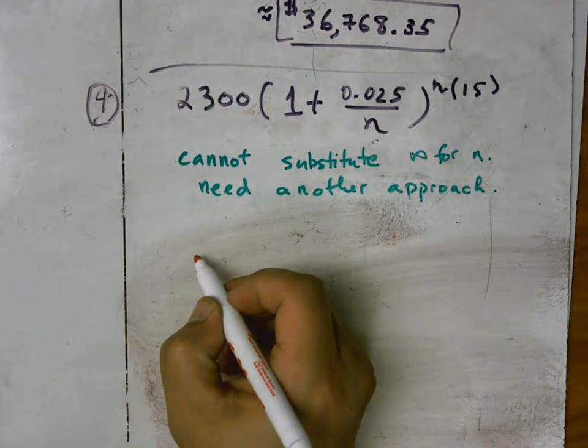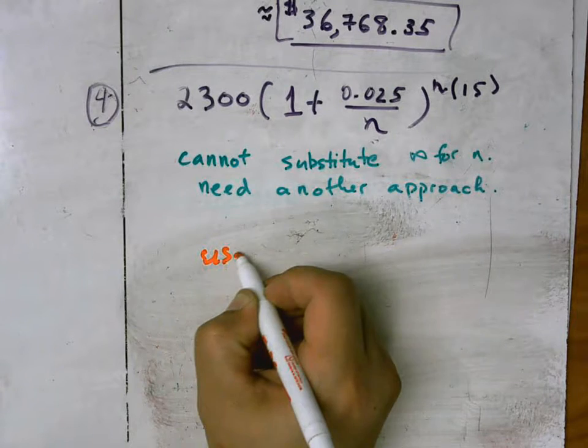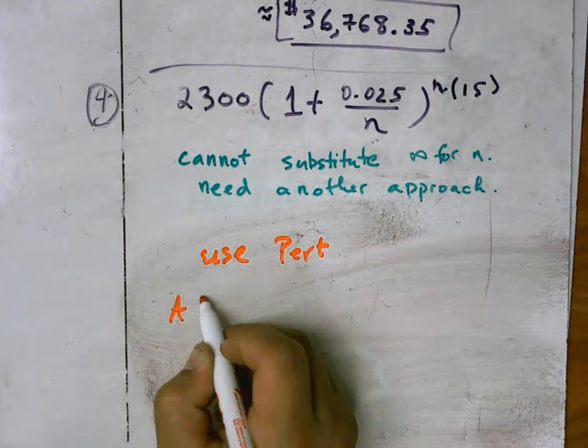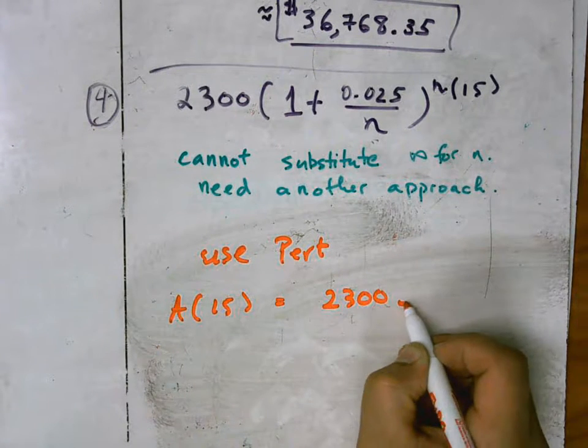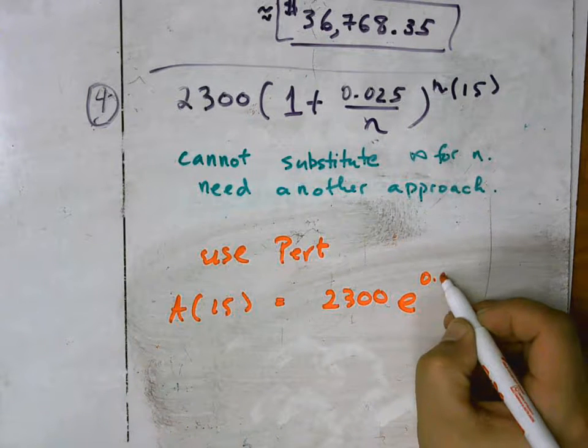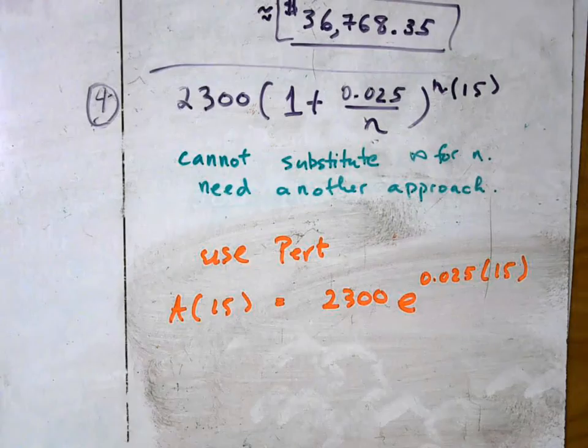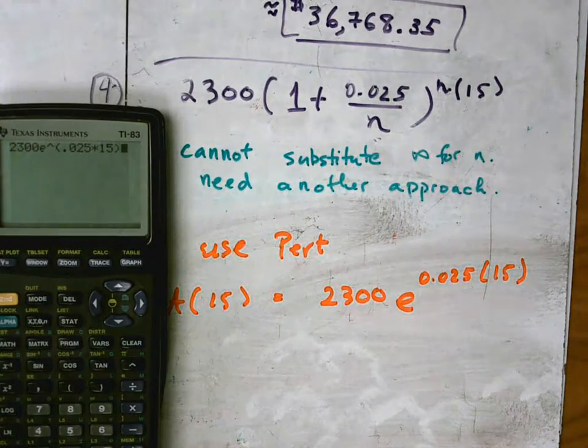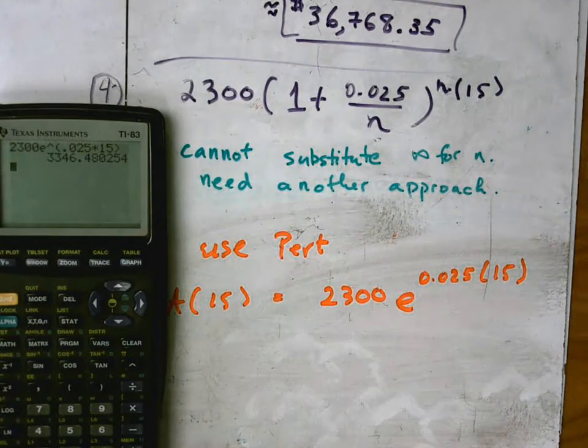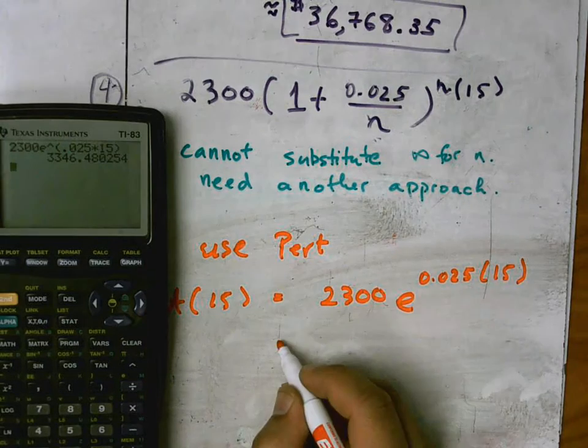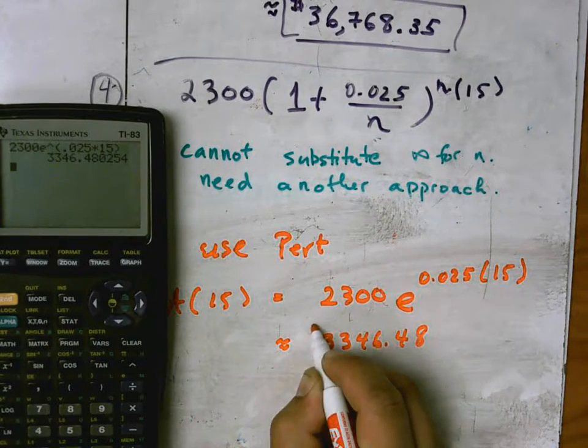So we can't substitute infinity for n, but we can use pert. So the amount that we have after 15 years is equal to the initial amount, 2300 times e to the r, which is 0.025 for 15 years. 2300 e to the 0.025 times 15, and we get 3346.48 dollars.